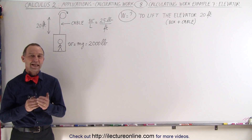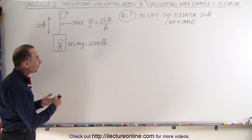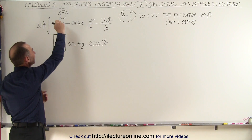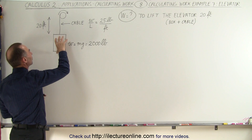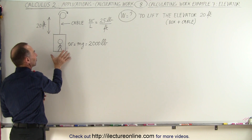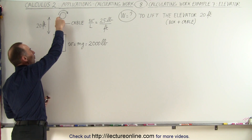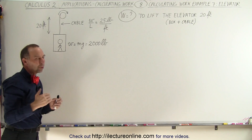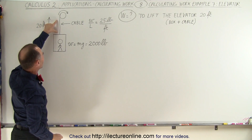Welcome to our lecture. In this example we're going to lift an elevator box and cable up 20 feet. The box will be lifted 20 feet, which is fairly straightforward. But the cable is going to be rolled up, so there'll be less and less cable being pulled up, and we're going to need to use integration to figure out the work for the cable.